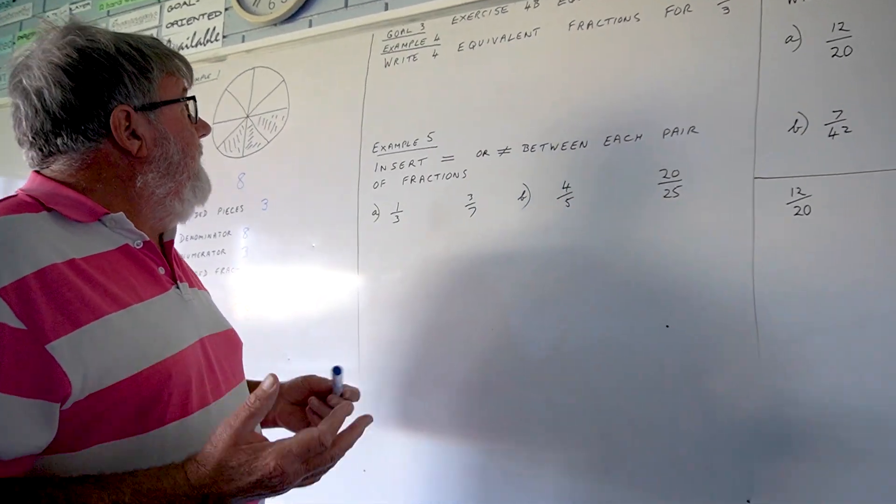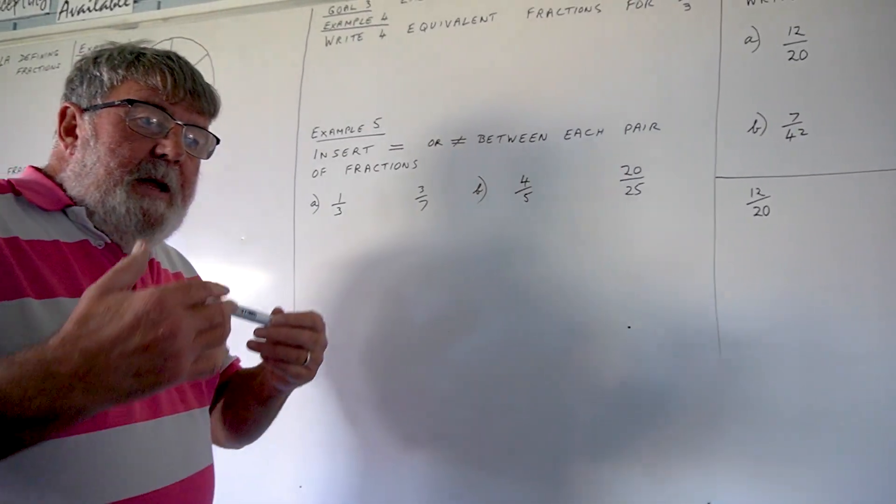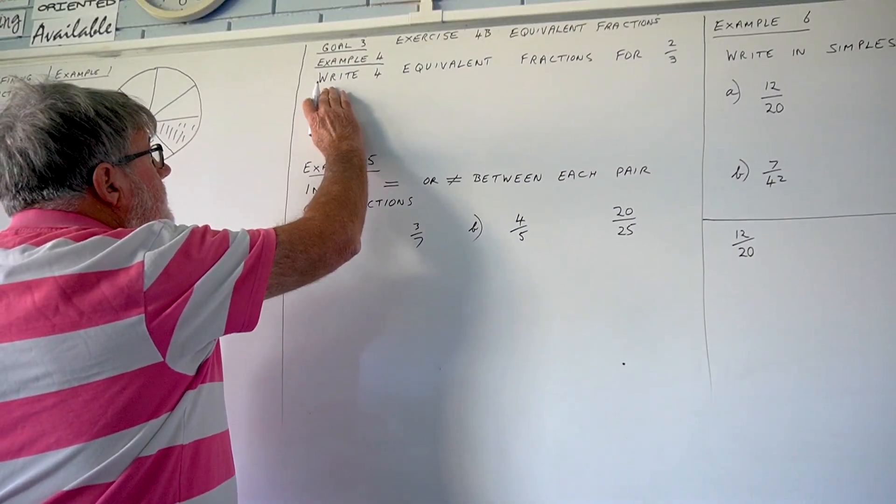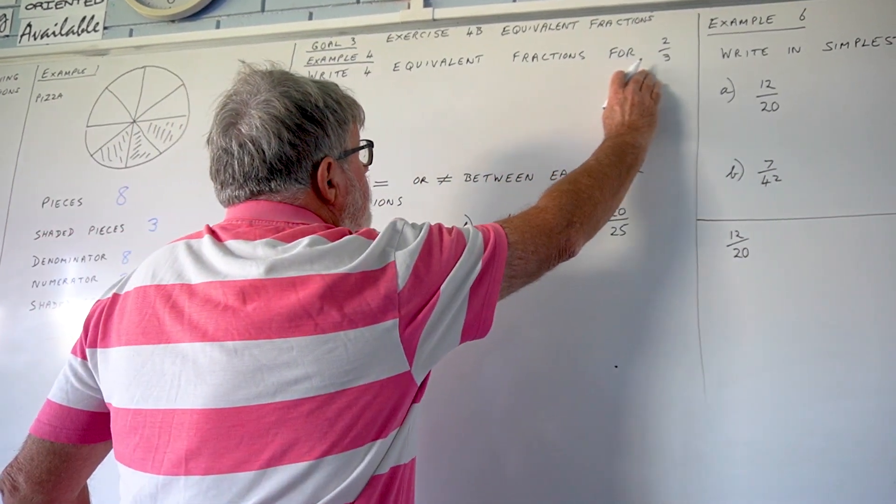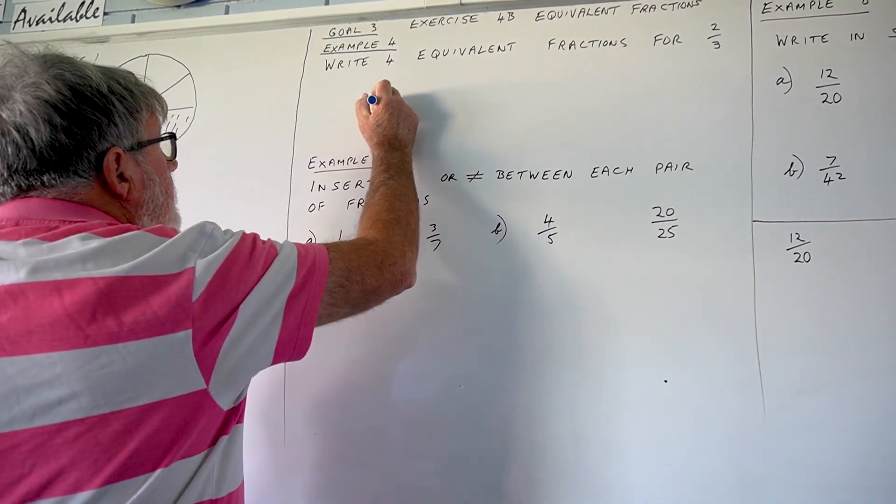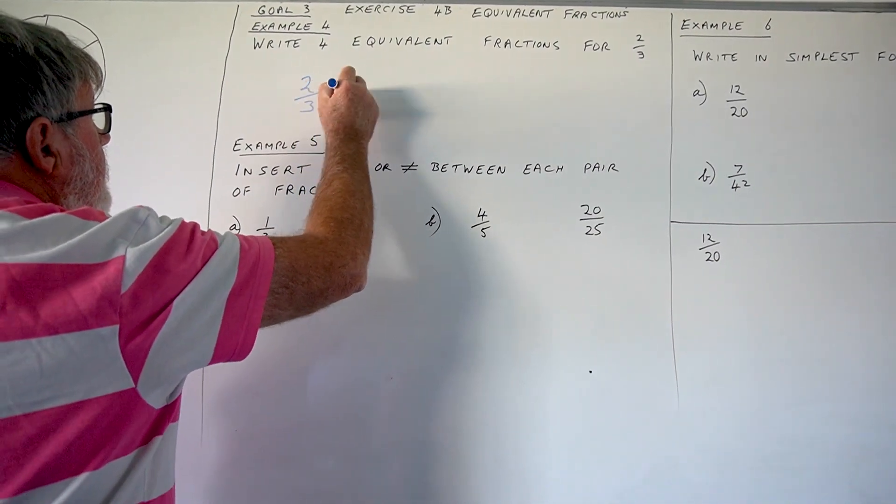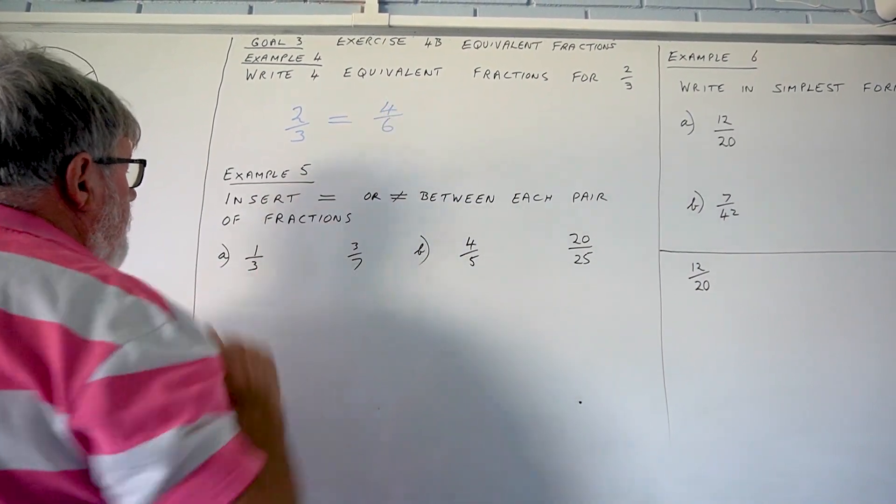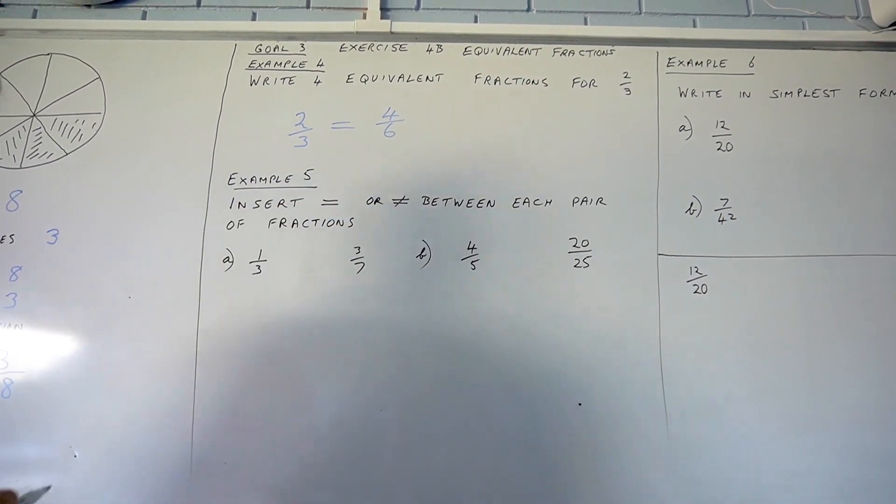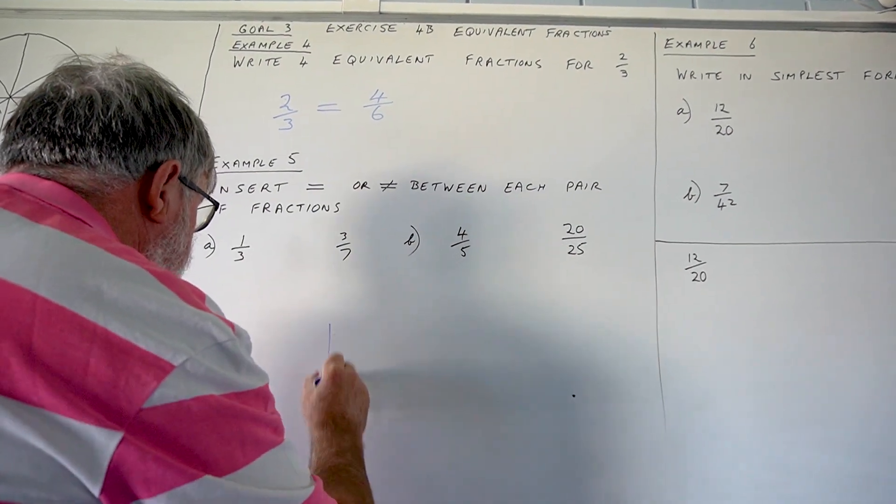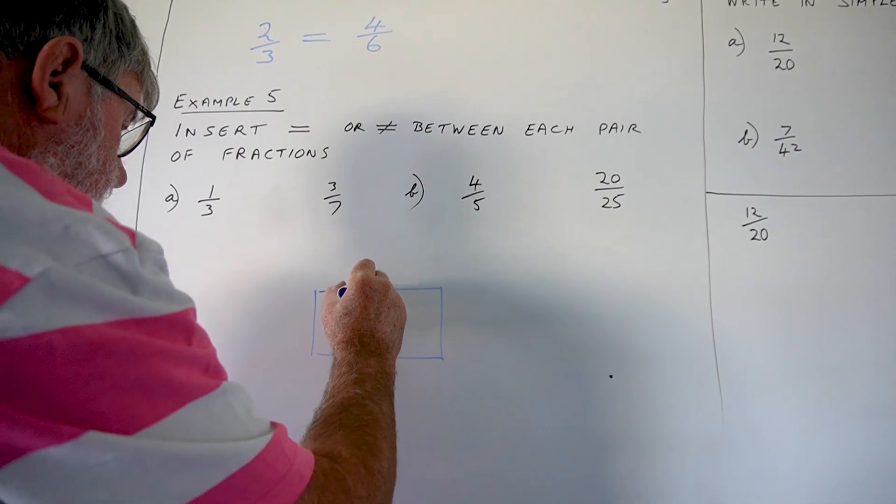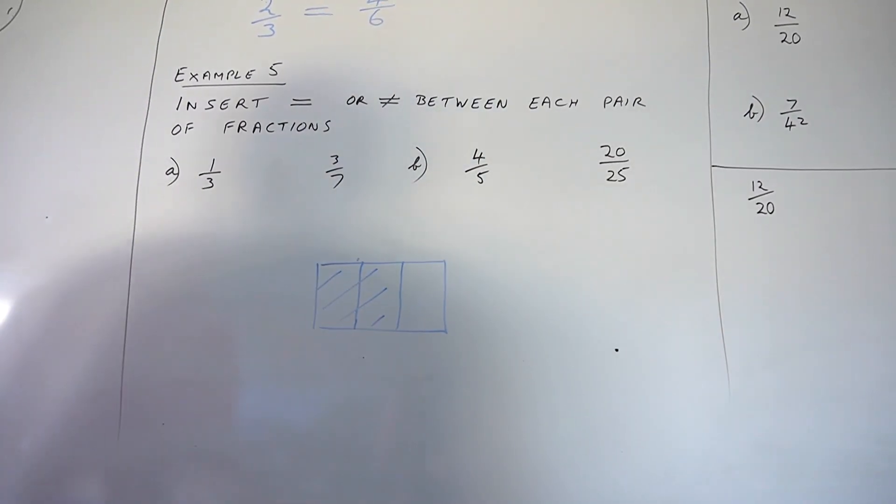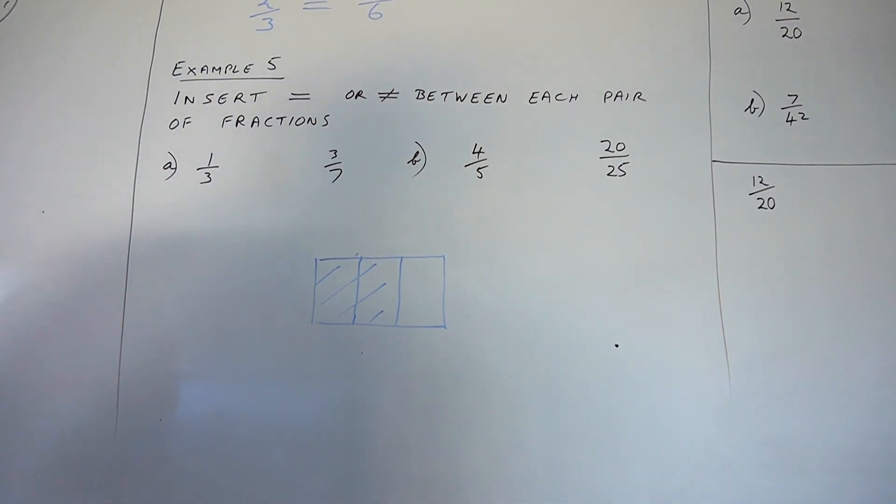The important thing about equivalent fractions is that they represent the same thing. In example 4, which you should have in front of you, which says write 4 equivalent fractions for 2 thirds, then 2 thirds is actually the same as 4 sixths. I can show you that now here, and I'm going to rub it off in a moment, but if you have a rectangle cut into 3 pieces and 2 of those pieces are shaded, 2 thirds of that rectangle is shaded.